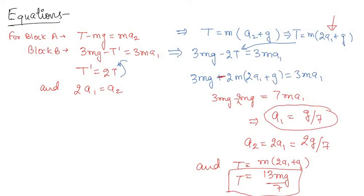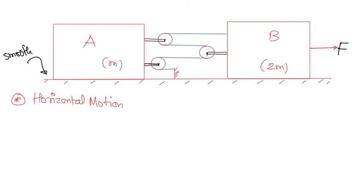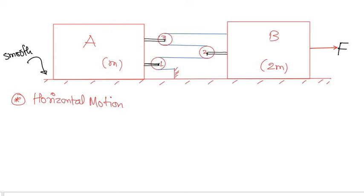That was how we deal with constraint motion — the most important part is the consistency of length, where you relate the accelerations of different blocks by keeping the total rope length constant. Let us now look at one more example. I will show how the consistency-of-length trick works for a system with multiple pulleys.